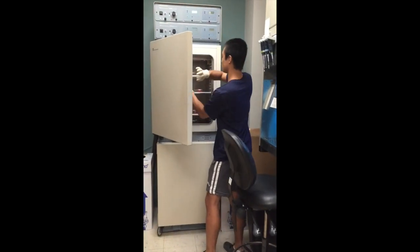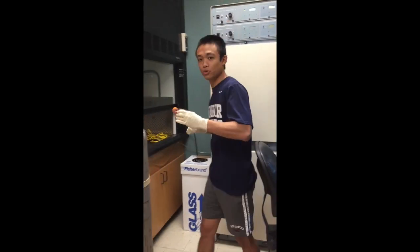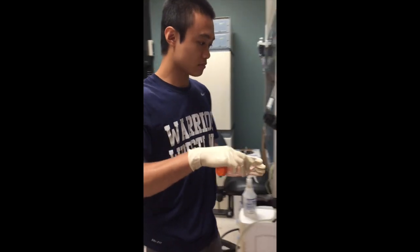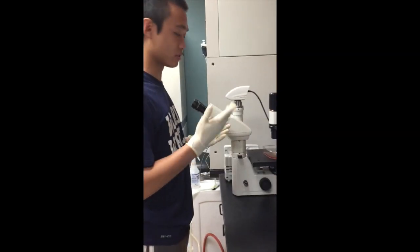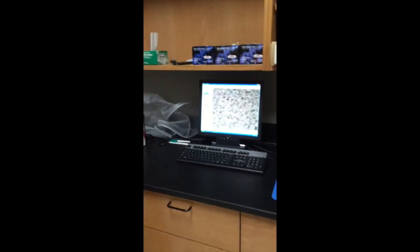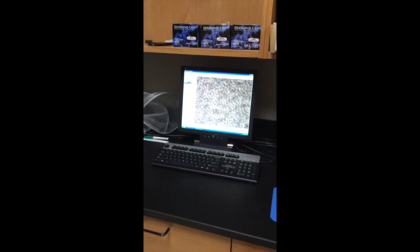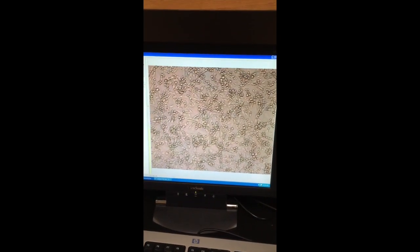So I will be splitting these A204 cells. First thing we always want to do before and after we mess with cells is looking at them under the microscope. So this microscope is hooked up to the computer. And so here we have our A204 cells.